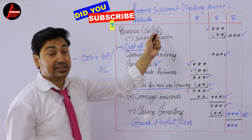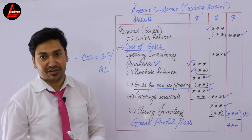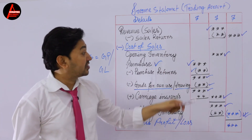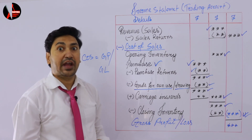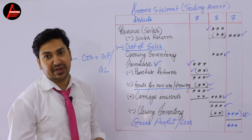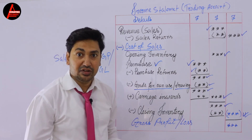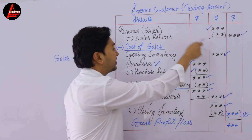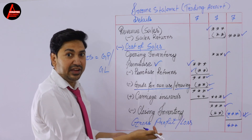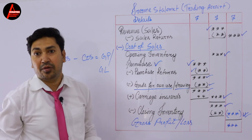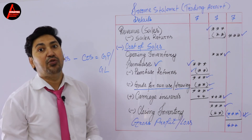This is how you prepare the first section of the income statement, which is the trading account. This is the universal format — wherever you are studying accounting, you need to know the income statement, and the first part must be done this way. If you remember this layout as I have represented here, you will have no problem with whatever question or trial balance is given.